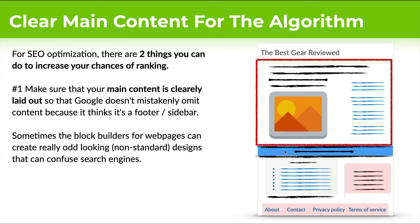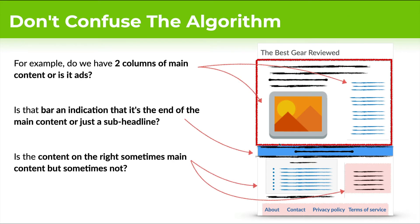Search engines are amazing at figuring out what the main content is — they've invested millions of dollars into it. However, you still want to make it as easy as possible for them to get the best ranking results. Take this page right here — it could actually be really confusing for search engines. At the top you have two columns of text. The left column is for sure main content, but on the right-hand side, is that advertisement or sponsored links? Is it also part of the main content? The algorithm has to make a decision and it might be right or wrong.